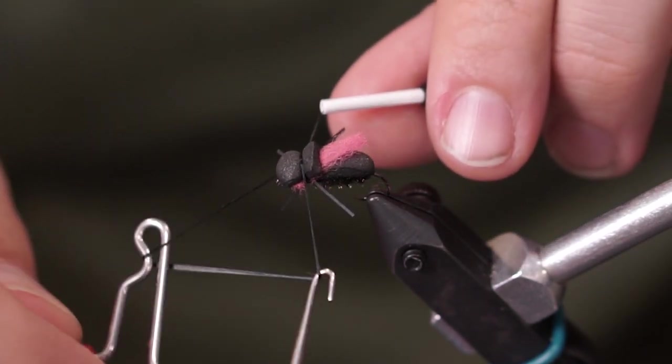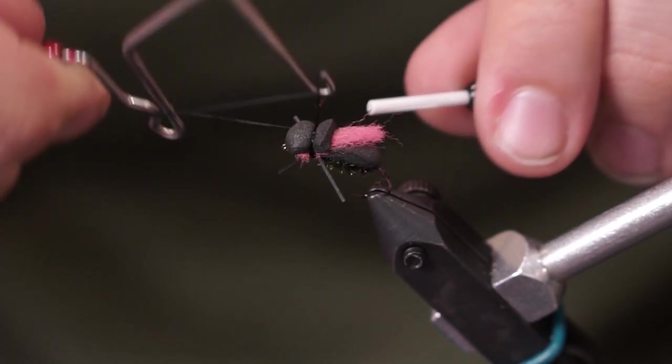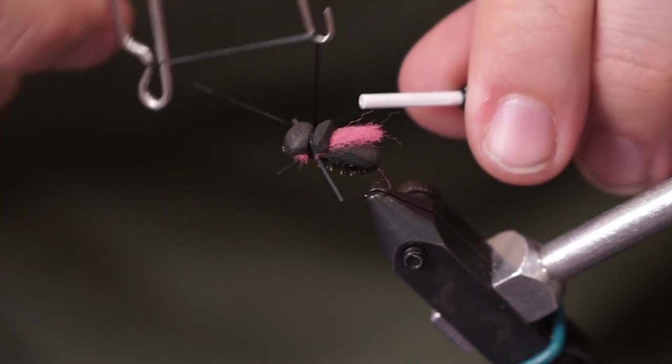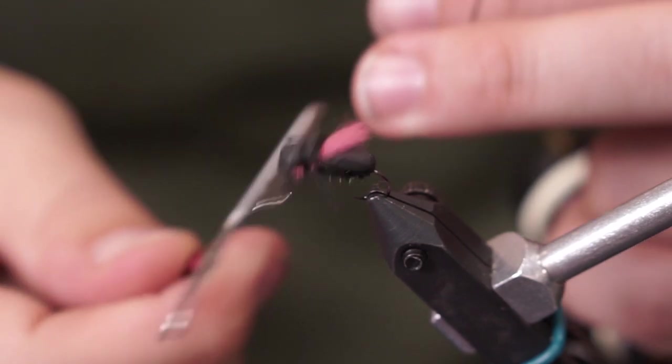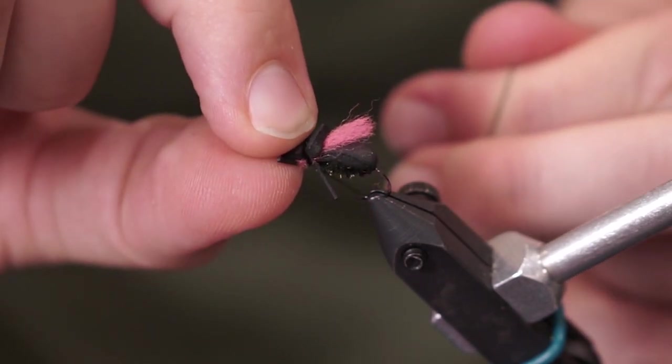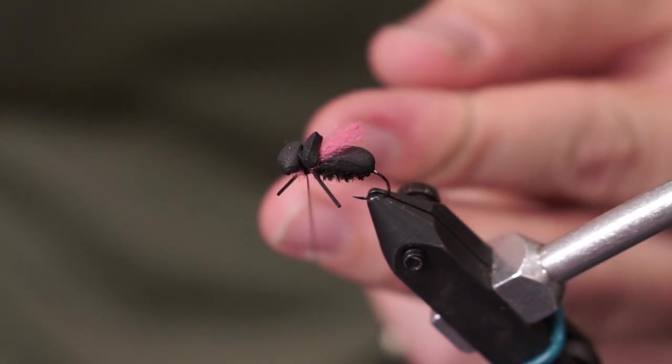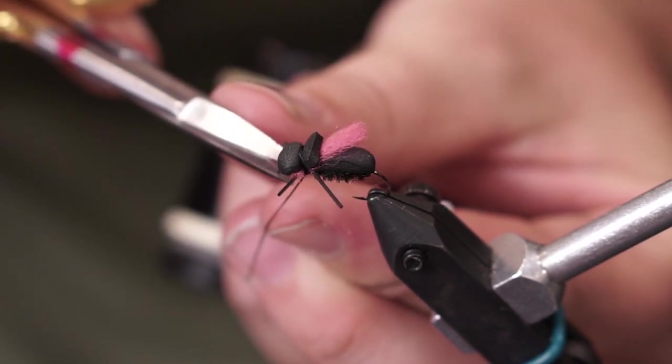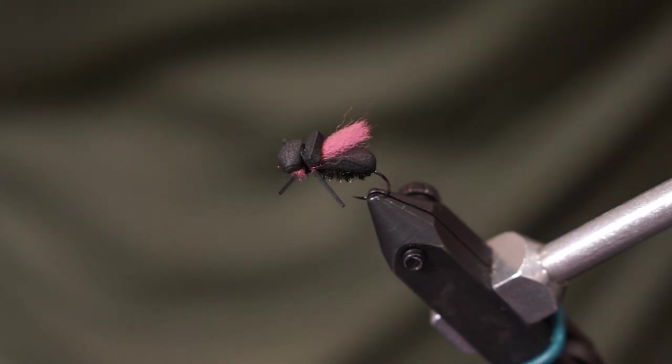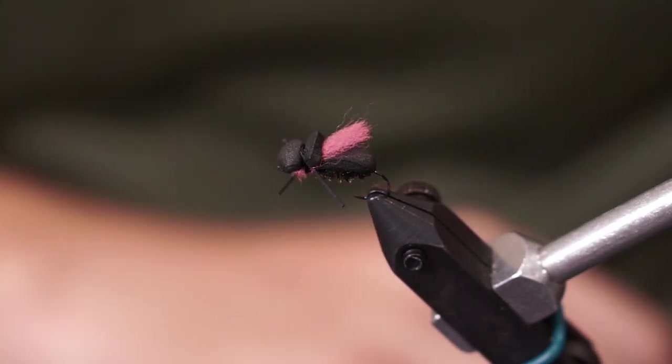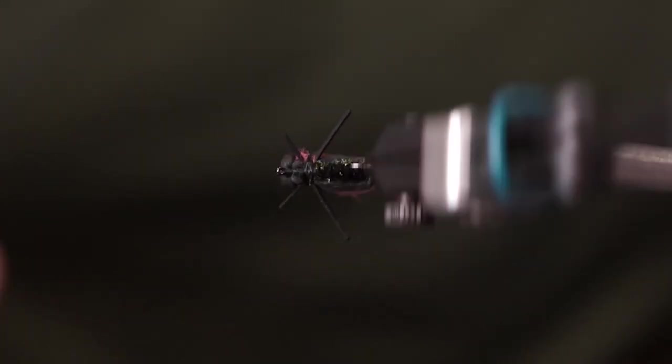So again, I've got a video showing how to use this tool if you're not familiar, but we're just going to do a three-turn whip finish. Pull it tight and trim off our excess thread. And that completes our beetle.